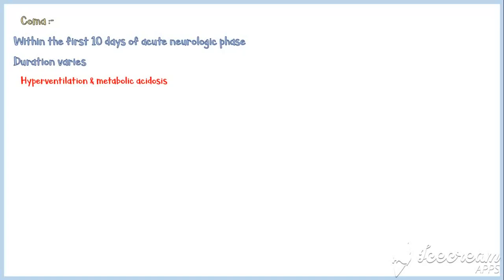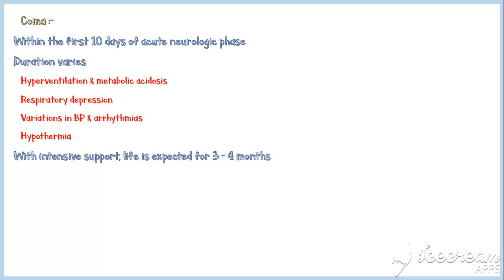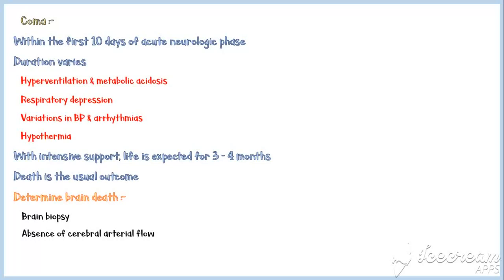Coma starts within the first 10 days of the acute neurologic phase, and its duration varies patient to patient. Common complications during this period include hyperventilation and metabolic acidosis, respiratory depression, variations in blood pressure and arrhythmias, and hypothermia. With intensive support, life is expected for three to four months; however, death is the usual outcome. It is important to determine brain death by brain biopsy and absence of cerebral arterial flow, because some neurologic symptoms may falsely suggest brain death.